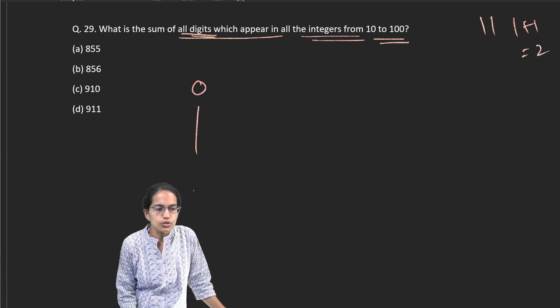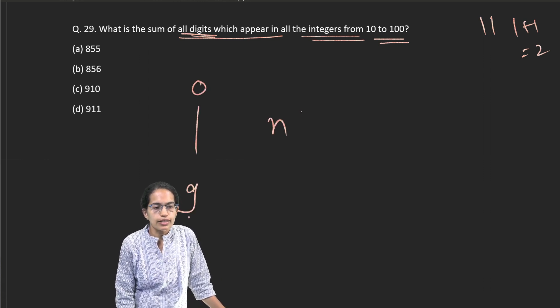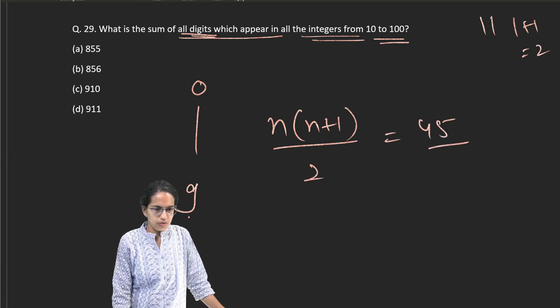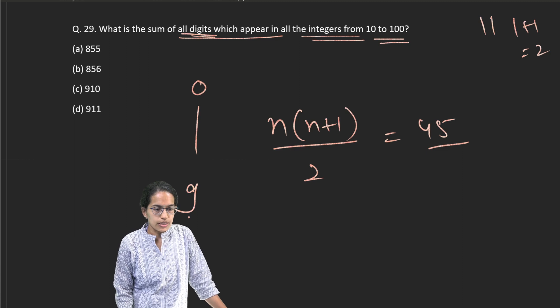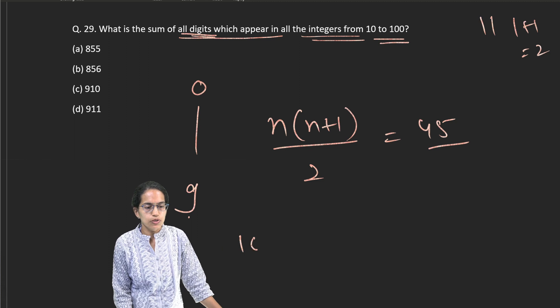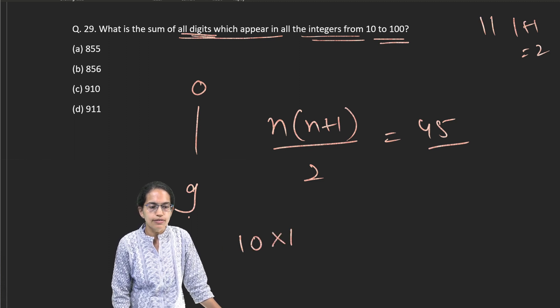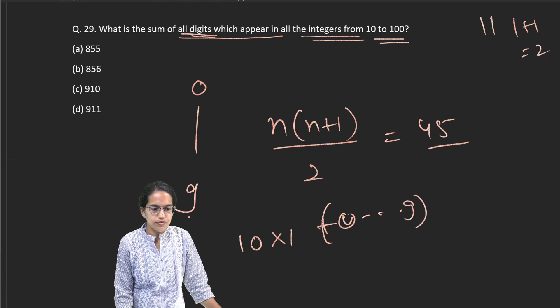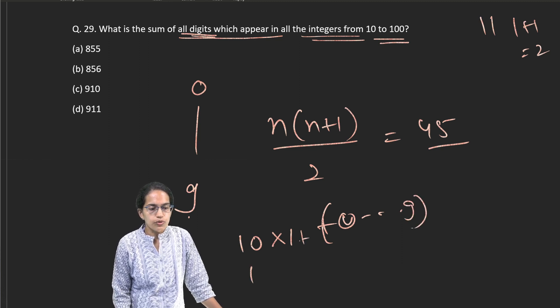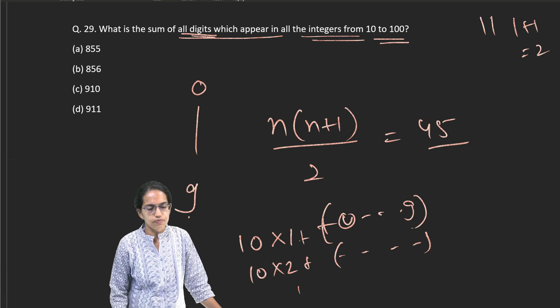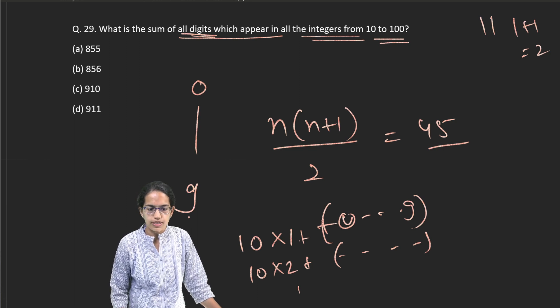So, let me do it from 0 to 9. 0 to 9 all numbers n into n plus 1 by 2 gives me how much? 45. That I have calculated. Now, when I have the first sequence from 10 to 19, I would do 10 into 1 plus 0 to 9. Then, I would do 10 into 2 plus 0 to 9 and this I would keep on doing till 10 into 9.